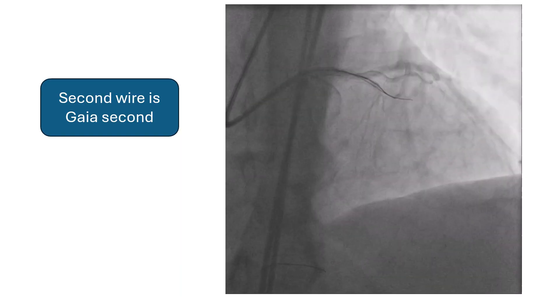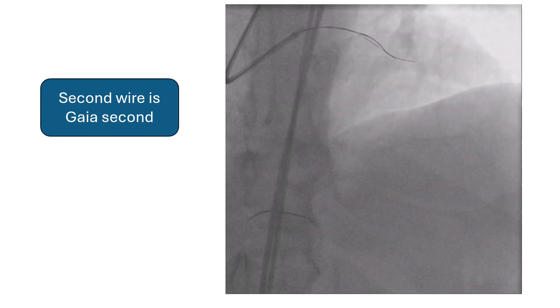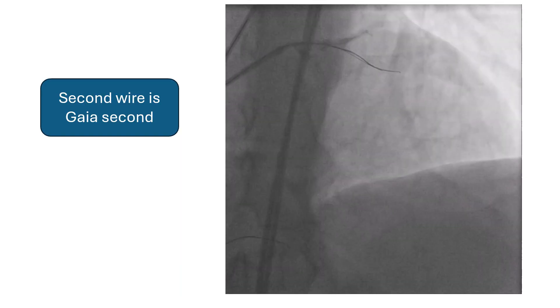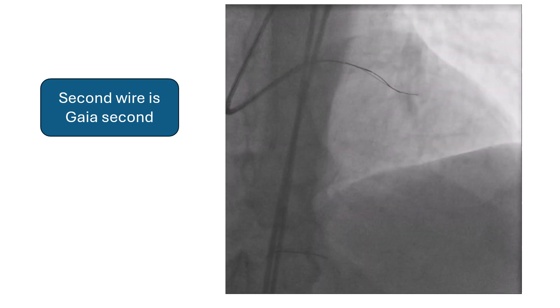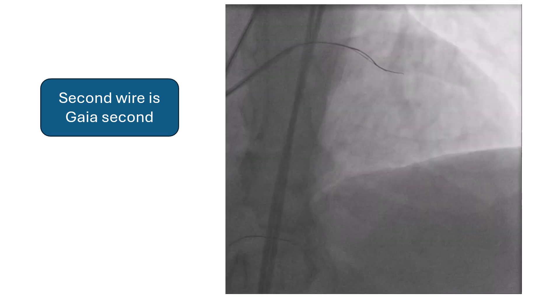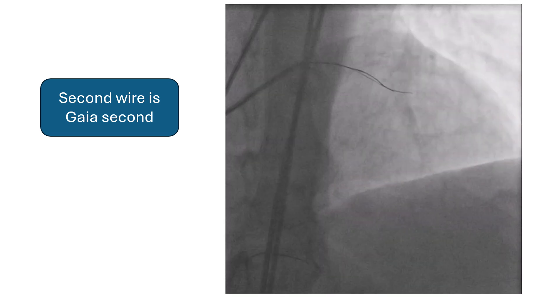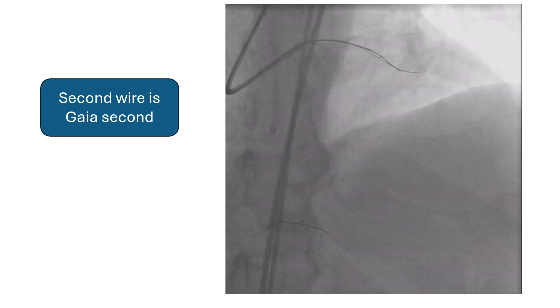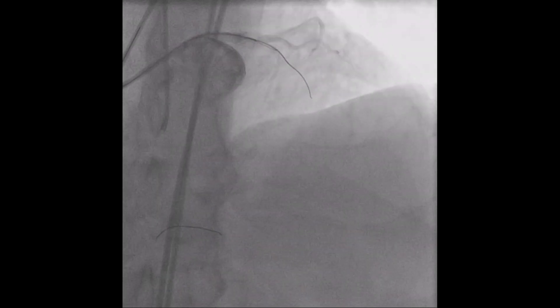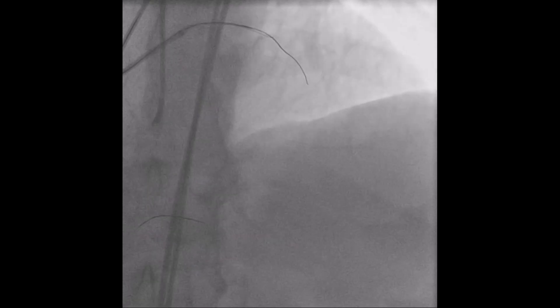So we used the parallel wire technique. The second wire was Gaia Second. It seems that it punctured the distal cap but entered into a branch. The wire was redirected to the LAD and it passed easily.